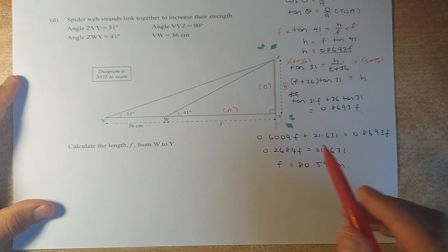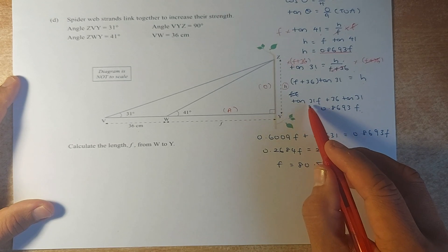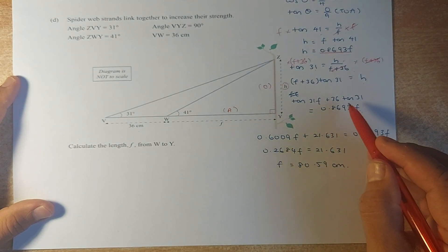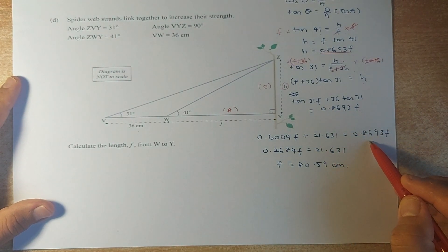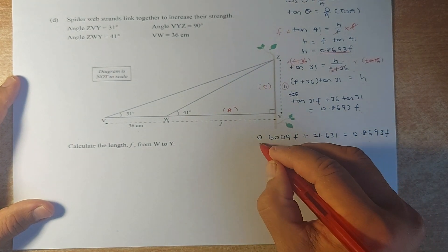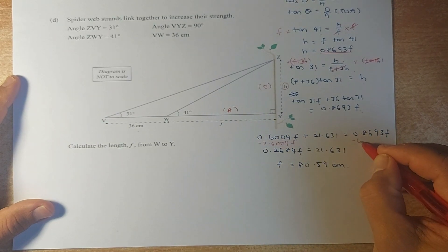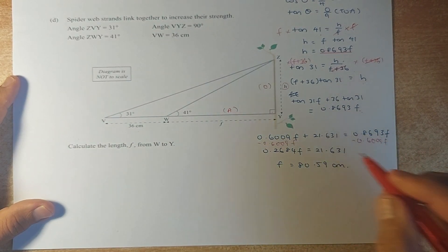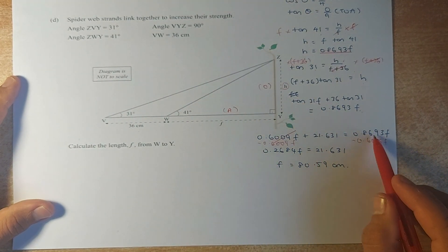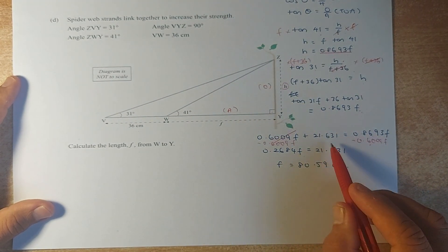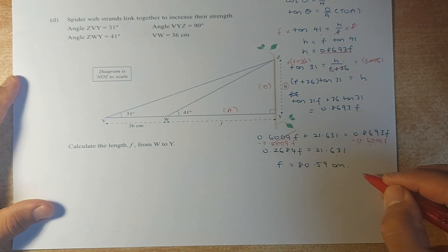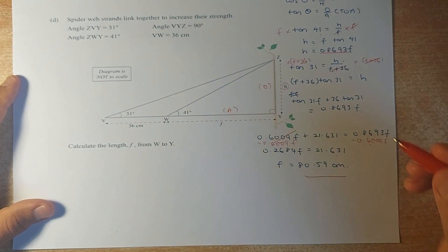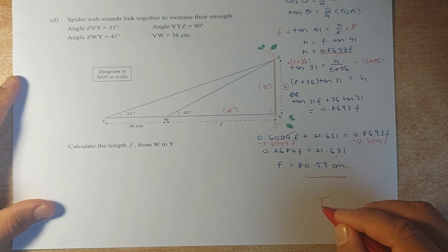Now we're going to solve algebraically. We have used your calculator. So tangent 31 is 0.6009F. 36 times tangent 31 is 21.631. And this remains as 0.8693F. Now the last step, you're going to minus 0.6009F on both sides. This will cancel out. So you are left with this minus this will give you 0.2684F equals to that. To get your F, you divide both sides by 0.2684. Put in your calculator and you should get that answer. Have a go again and you should be able to ace this paper. It's quite easy. Have a good day and see you soon. This is an excellent. Cheers.